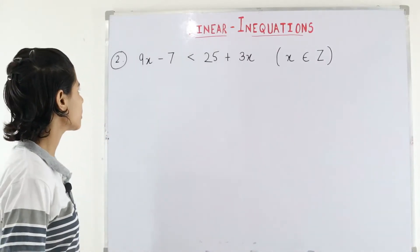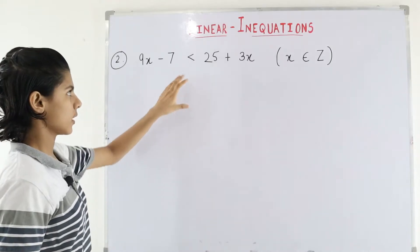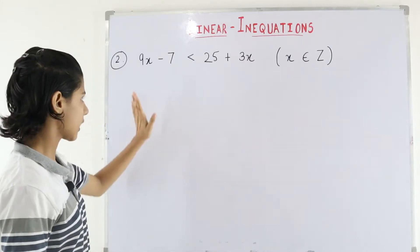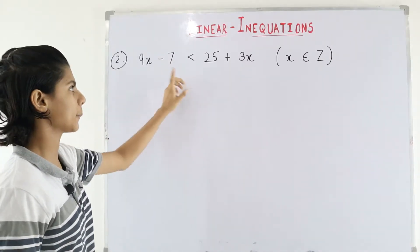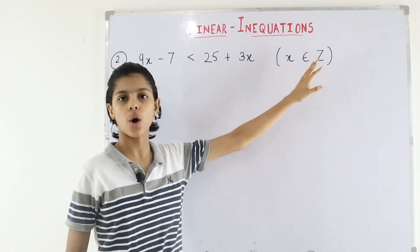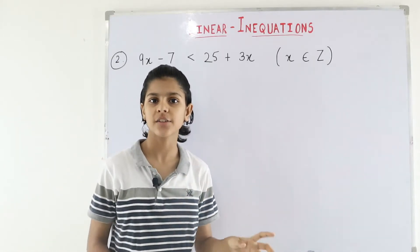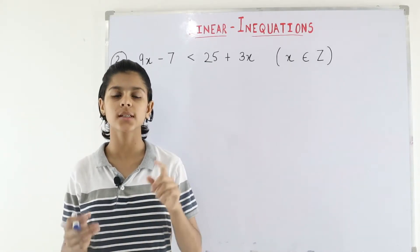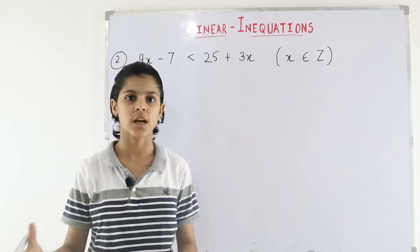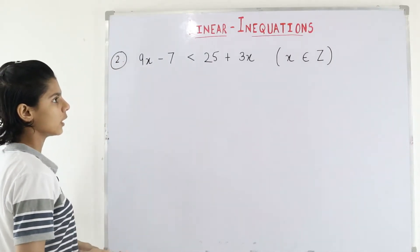Now here is the next question: 9x minus 7 is less than 25 plus 3x. The difference here is that on both sides of the less-than sign there are variables — 9x on one side and 3x on the other. x belongs to Z, where Z means integers — all negative numbers, all positive numbers, plus 0.